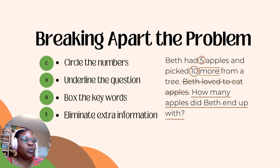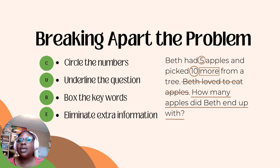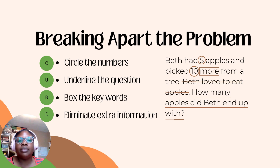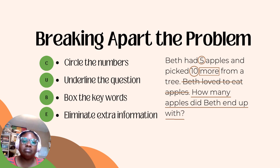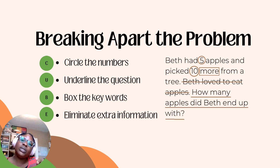Now we're going to eliminate — we're going to cross out extra information. Here we have a line through 'Beth loved to eat apples.' That doesn't help us with our equation; it's just telling us she loves to eat apples. That's cool, but we don't need it.